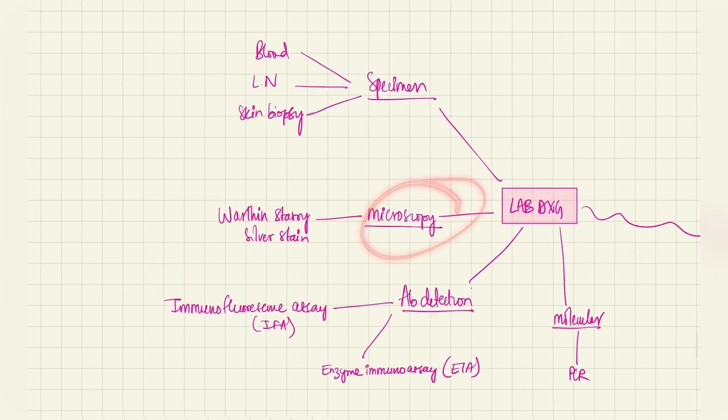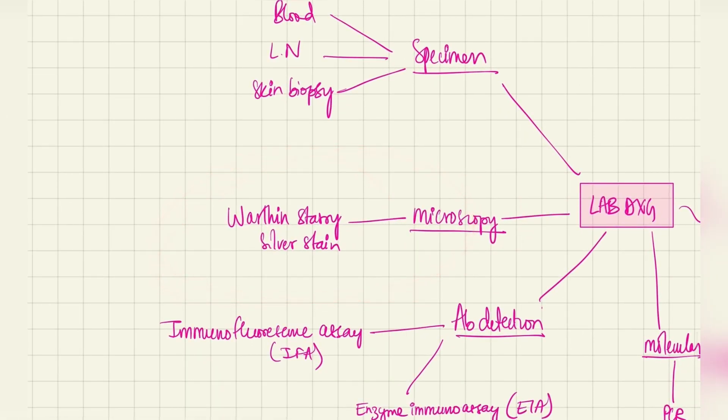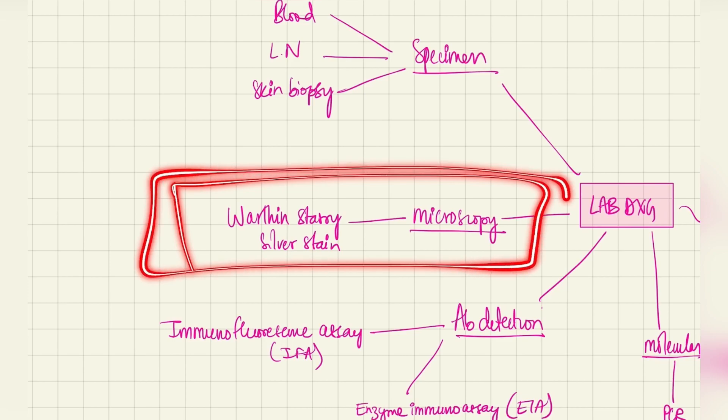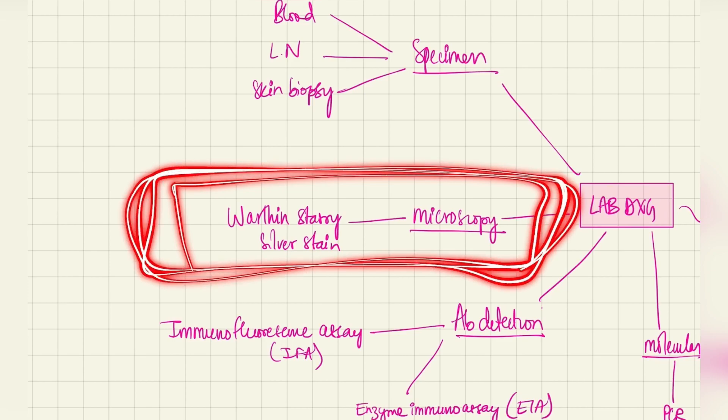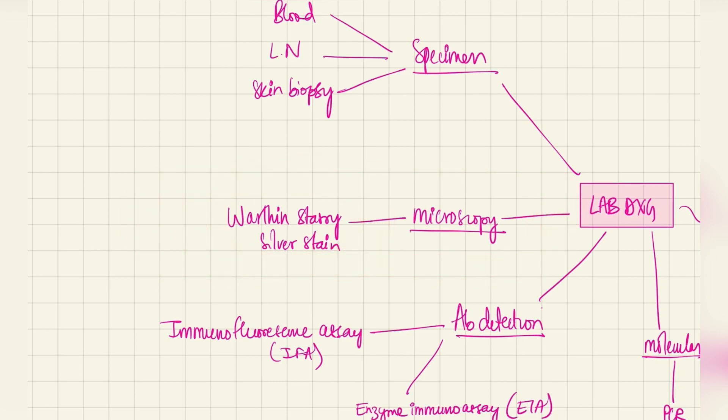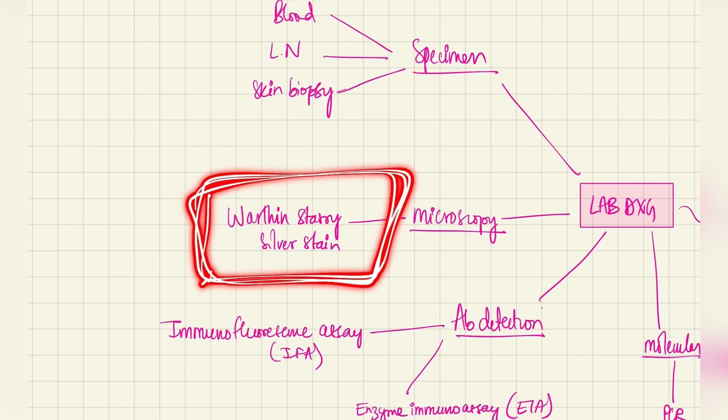Microscopy. This is the only important thing in lab diagnosis. The only one thing you need to remember in lab diagnosis. The Warthin-Starry silver stain is used to detect these Bartonella organisms. The Warthin-Starry silver stain. Very important.